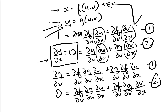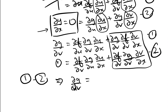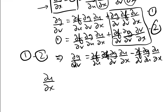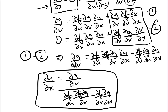Those are equations 1 and 2 after multiplication. The dv/dx terms are now identical, so subtracting equation 2 from equation 1 eliminates dv/dx. Taking du/dx out as a factor, we get: du/dx equals ∂g/∂v divided by (∂f/∂u · ∂g/∂v minus ∂f/∂v · ∂g/∂u), assuming that the denominator is not equal to zero.